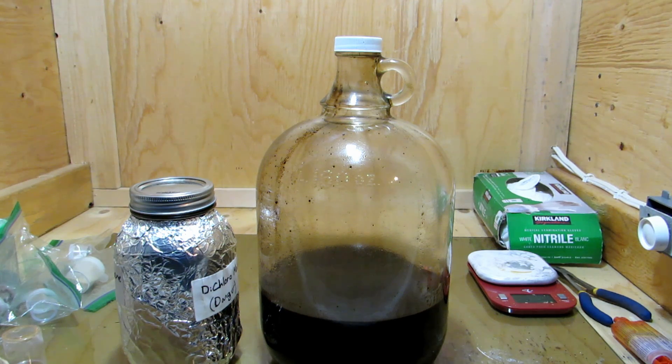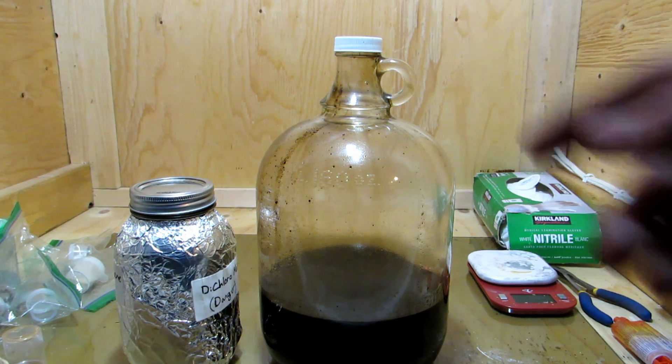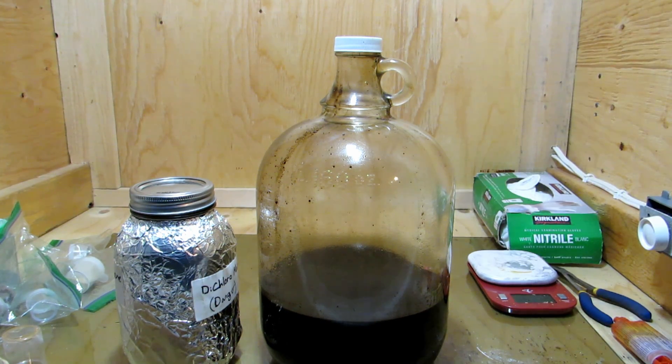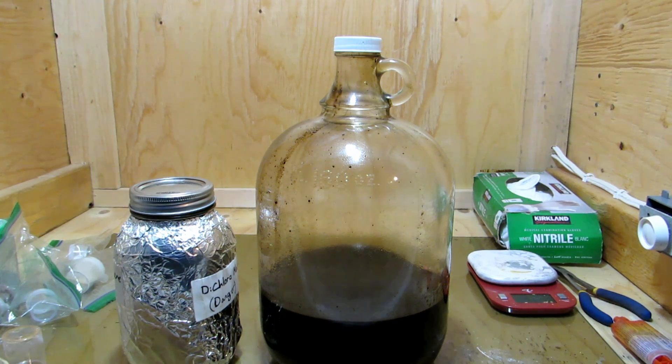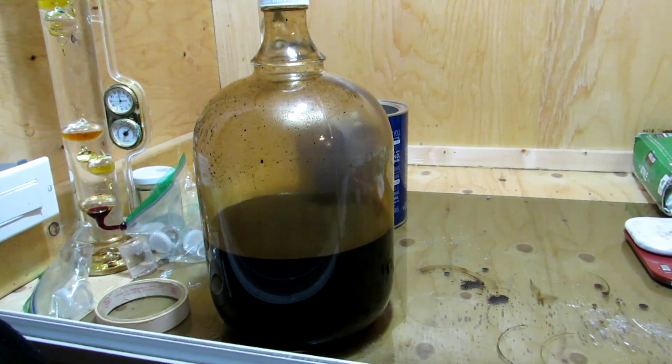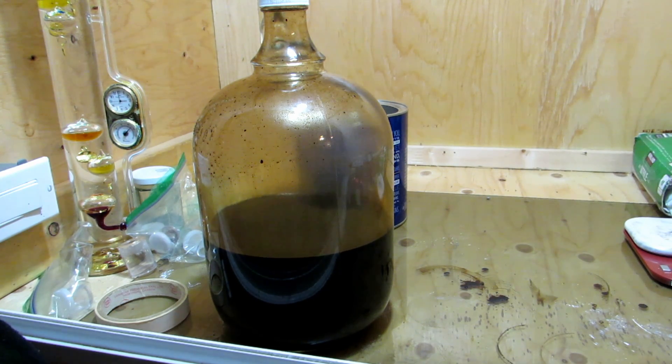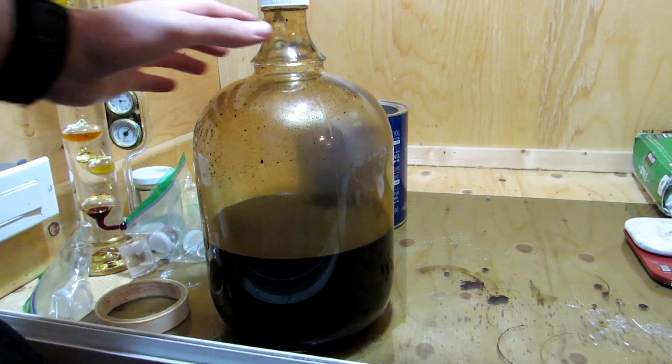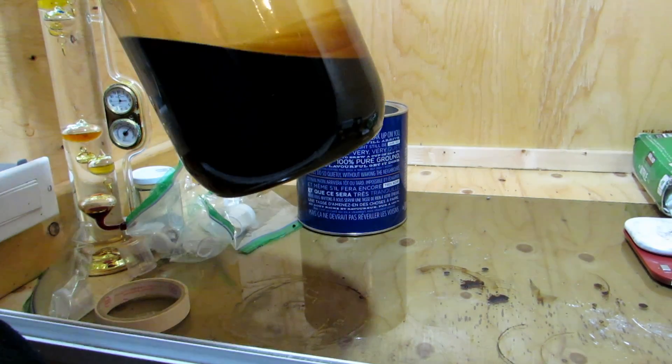We're going to add in all of our dichloromethane, and then we're going to be mixing this up fairly vigorously, but not too vigorously because we might form an emulsion. Hopefully all our caffeine will go into the dichloromethane layer. Our dichloromethane has been added, and I shook it around fairly vigorously. I shook it to get everything well mixed. Hopefully most of our caffeine is dissolved into the dichloromethane.